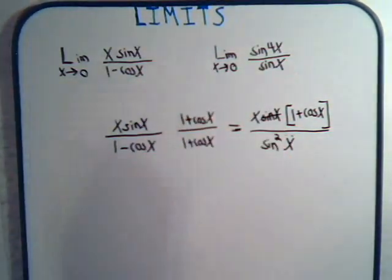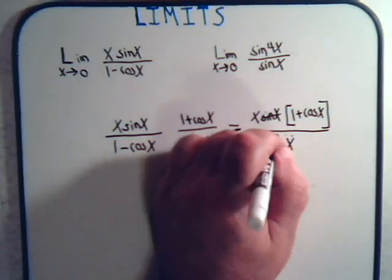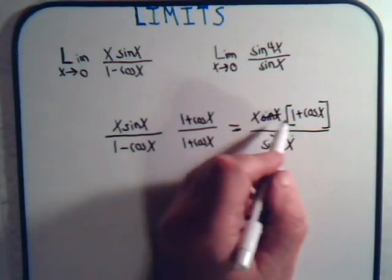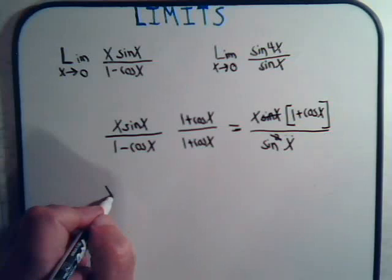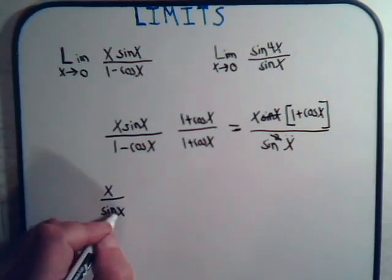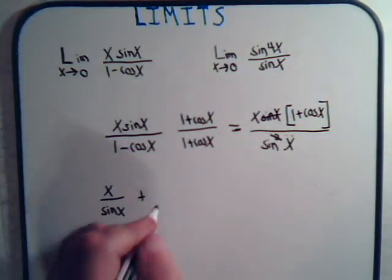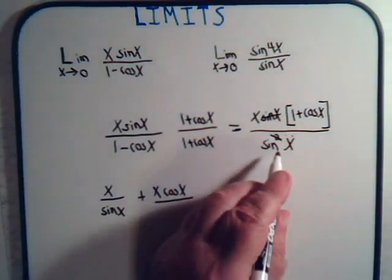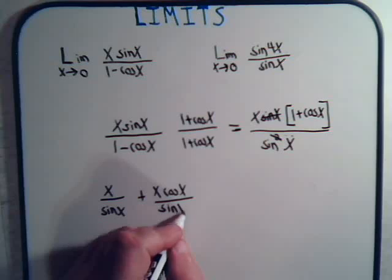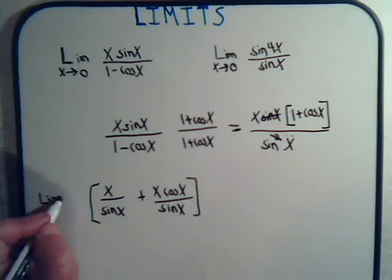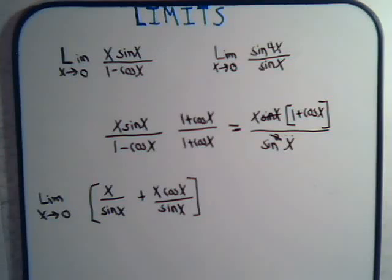Then, here we have sine squared of x. And this, and that cancel. So, now we have x divided by the sine of x. Plus, x times the cosine of x divided by the sine of x. And we want this limit as x goes to 0.